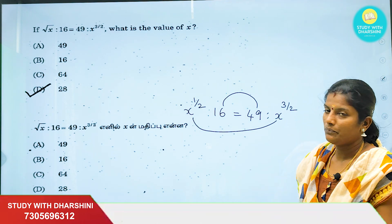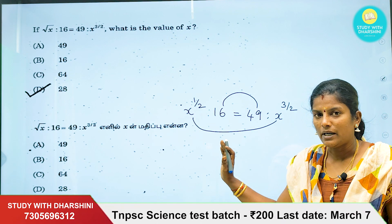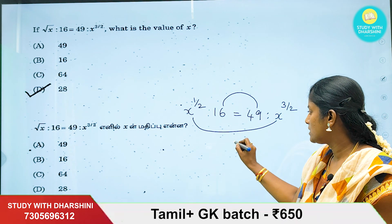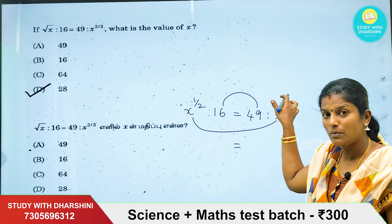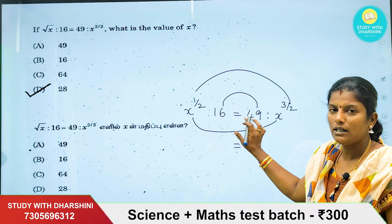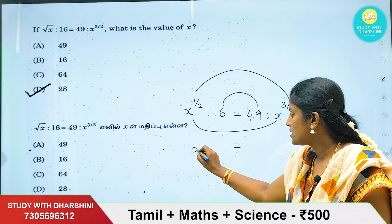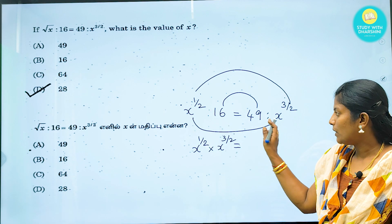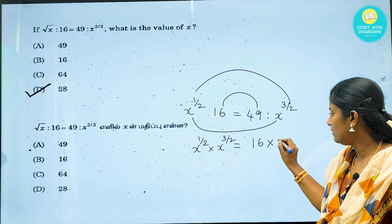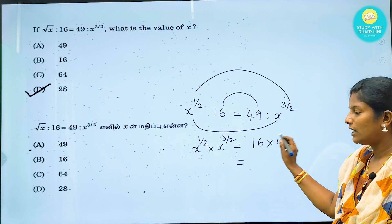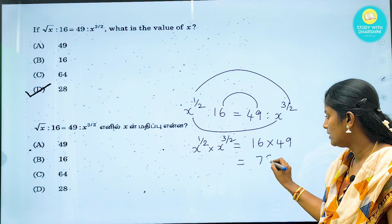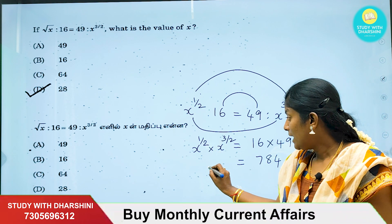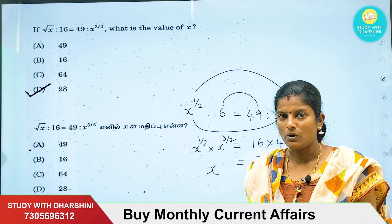First term times last term: we multiply 16 into 49, and x power 1 by 2 into x power 3 by 2. So 16 into 49 equals 784. Now we already have the powers on both sides.